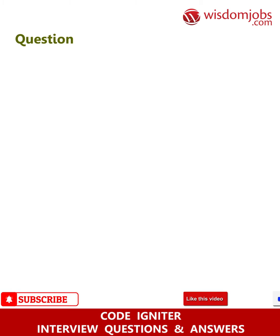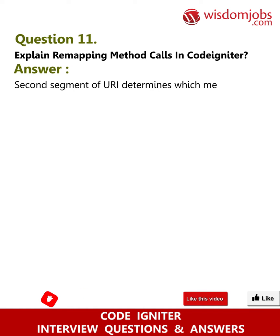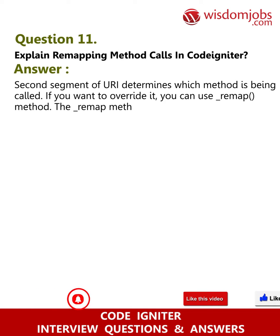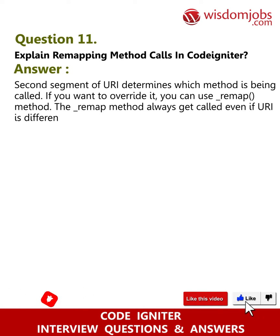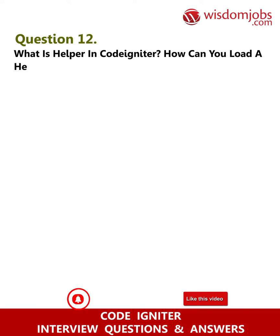Question 11: Explain remapping method calls in CodeIgniter. Answer: The second segment of the URI determines which method is being called. If you want to override it, you can use the _remap() method. The _remap() method always gets called even if the URI is different — it overrides the URI.